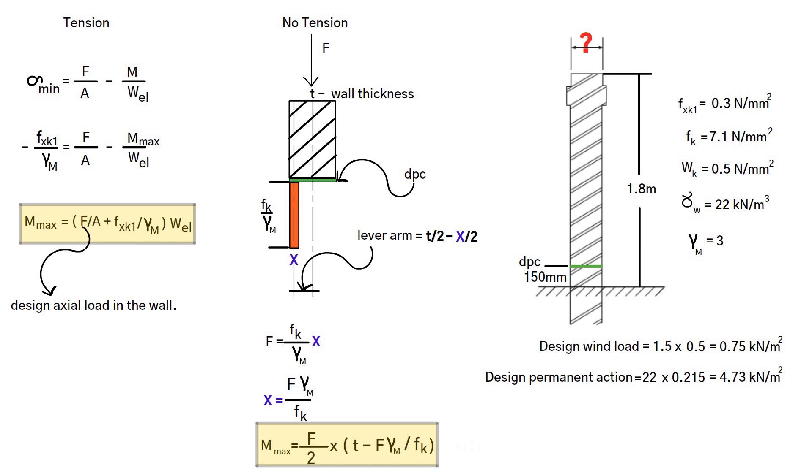Let's now conduct some analysis. Consider a 1 meter long wall. Maximum bending moment for a cantilever equals design wind load times wall height 1.8 squared divided by 2. This results in 1.215 kilonewton meter. We must also calculate the bending moment at DPC, which is equal to the design wind load multiplied by the wall height up to DPC 1.65 squared divided by 2. This gives us a value of 1.021 kilonewton meter.